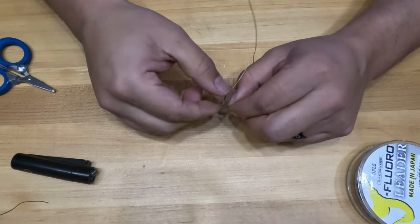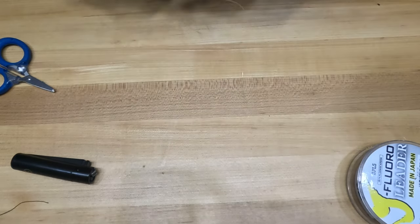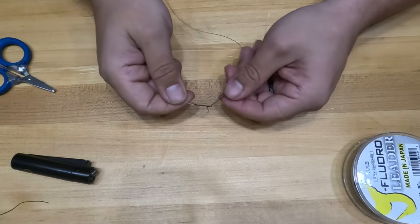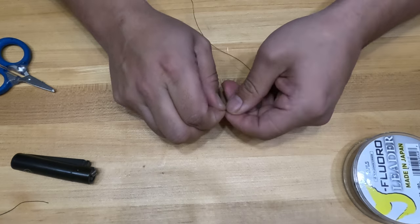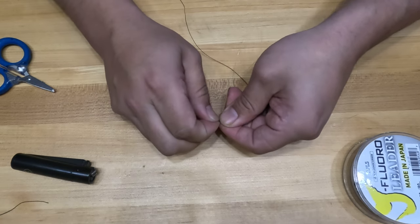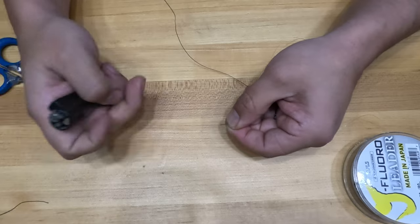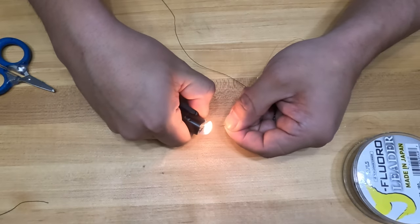But for me, what I have found is to use the same technique for the fluorocarbon on the braid. Wet it with your mouth, hold the knot in your thumbs and use a lighter to burn down the braid, creating a little nub that won't slip through your knot as it's being fished.